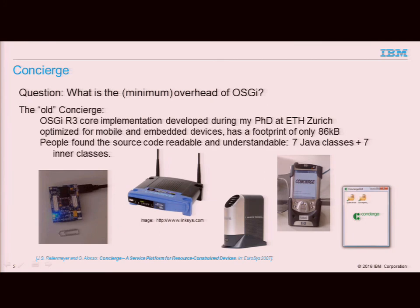Many years ago — actually I think it was in 2005, during the OSGi World Congress in Paris — I was listening to all these great talks and I really wondered what is the minimum amount of footprint that you can implement a full OSGi framework in. And I started to play around. I started to do this as part of my master thesis first and then continued in my PhD. And my answer was I could do it in actually 86 kilobytes and with a relatively simple structure. My original implementation, which was an implementation of the R3 core standard, only had seven Java classes and seven inner classes. And that was a relatively complete implementation. People liked this in terms of being fast and lean.